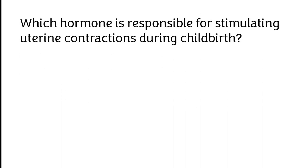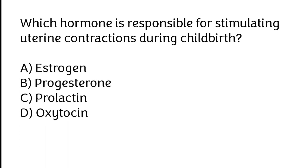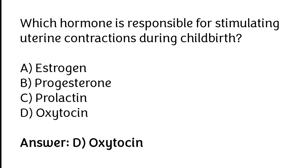Which hormone is responsible for stimulating uterine contractions during childbirth? Estrogen, Progesterone, Prolactin, Oxytocin. The correct answer is Option D — Oxytocin hormone is responsible for stimulating uterine contractions during childbirth.